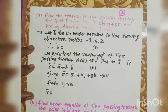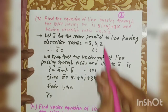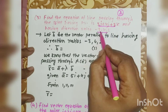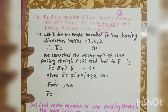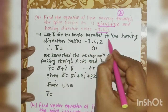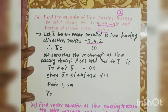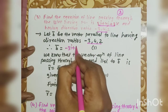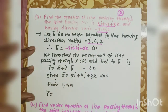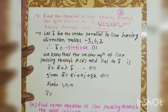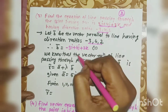Next example: find the equation of a line passing through the point with the given position vector and having the given direction ratio. The direction ratio of the line is given. Let b̄ be the vector parallel to the given line whose direction ratio is given. The vector parallel to the line with those direction ratios is: b̄ = −3i + 4j + 2k. The direction ratios are placed into i, j, k components.